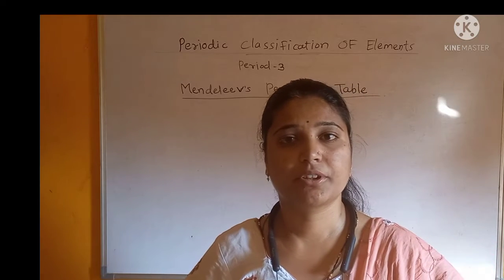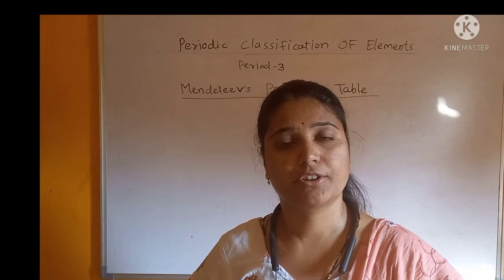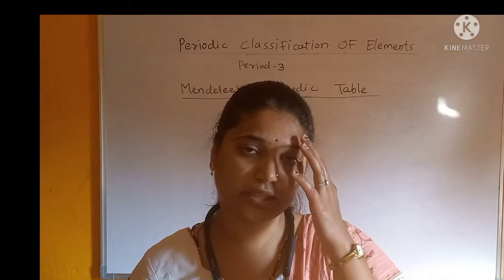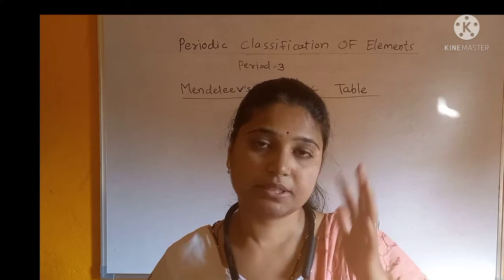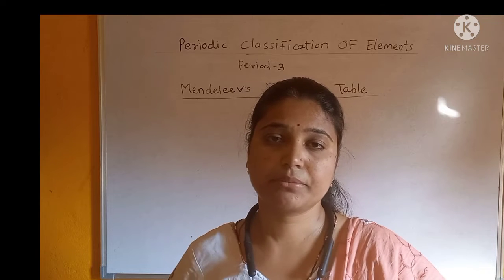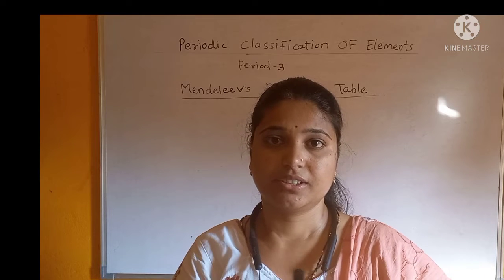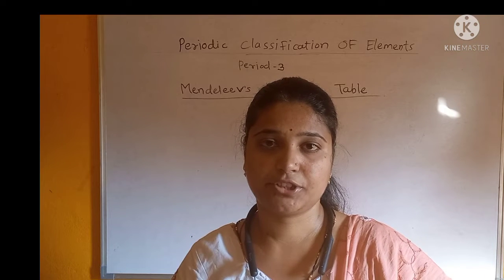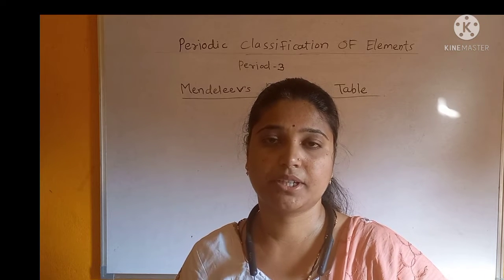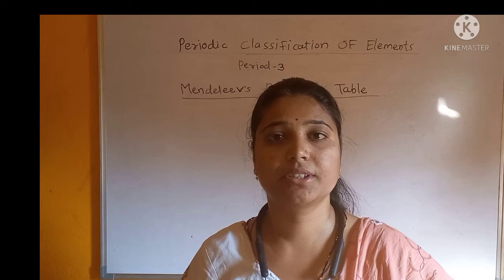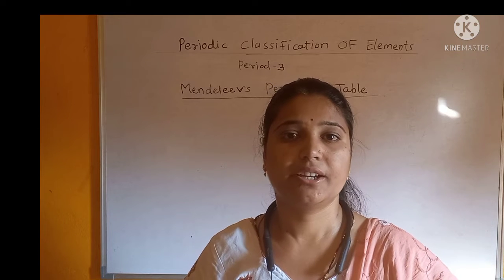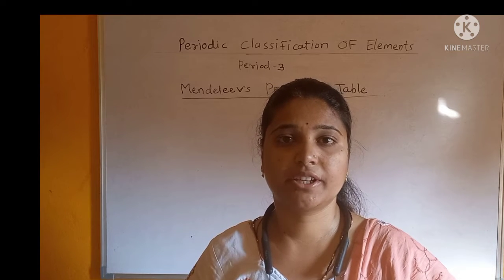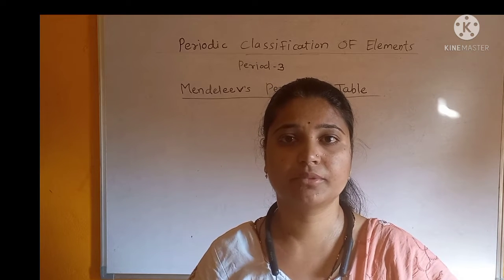Similarly, Mendeleev also gave statements regarding the periodic table. The first statement is: the properties of elements are the periodic functions of their atomic mass number. He arranged the elements in their increasing atomic mass number. At that time only sixty-three elements were known.